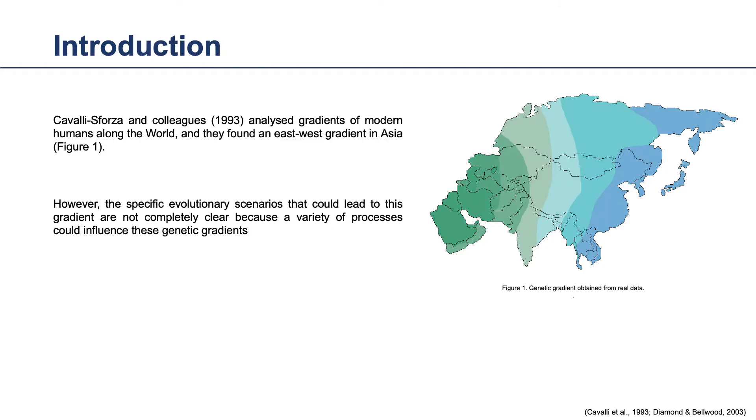Genetic gradients have been used to analyze genetic variation around the world. In particular, Cavalli and colleagues studied the Asian continent and found the genetic gradient with an east-west orientation. Still, different processes may explain or influence the genetic gradient,